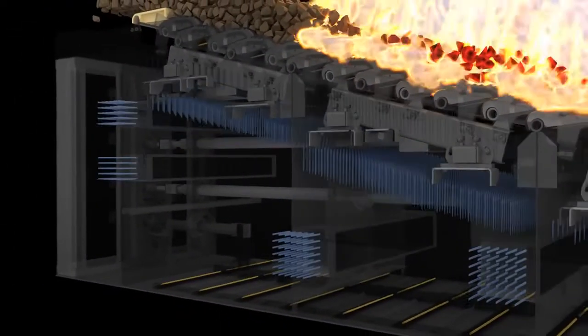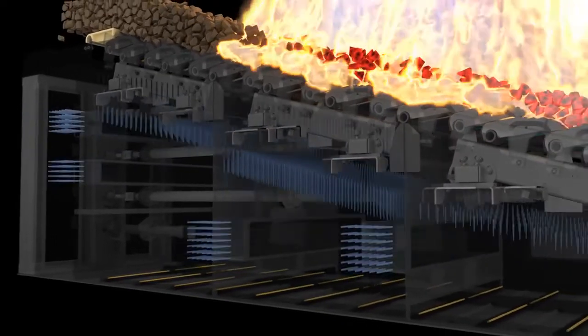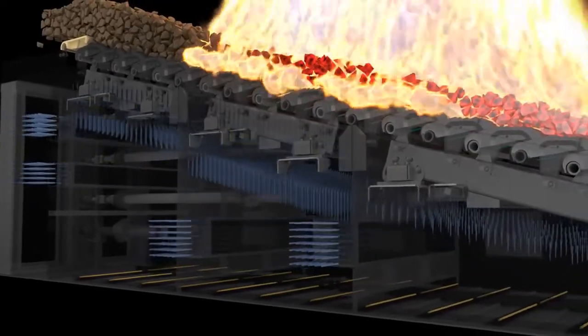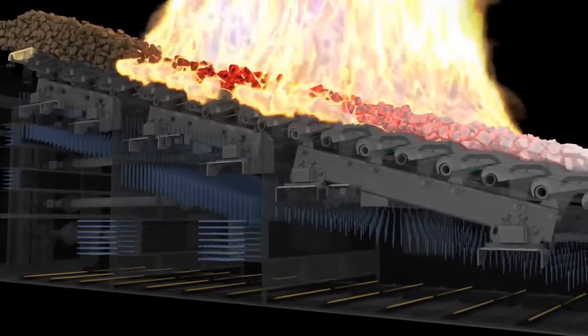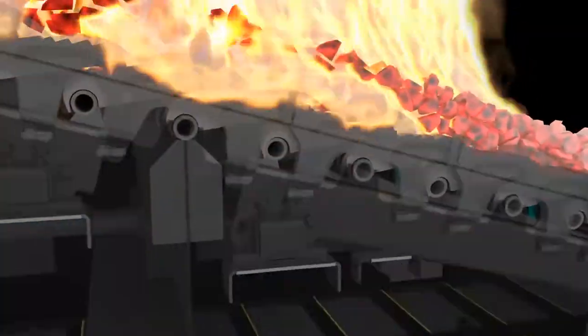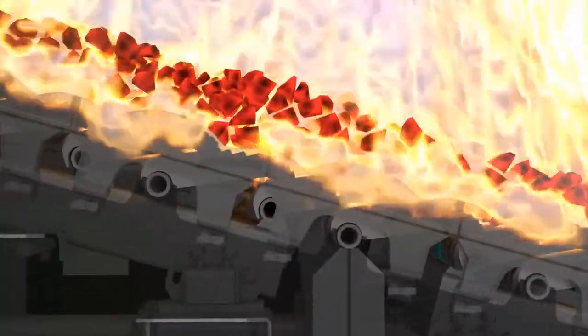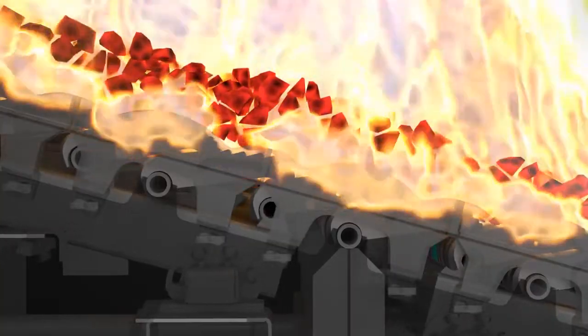Each section of grate consists of hydraulically driven trolley and independent air supply. The speed of each trolley and its respective air control ensures most efficient control of air to fuel ratio. Reciprocating motion gives toppling action to the fuel particles, hence ensuring complete combustion.